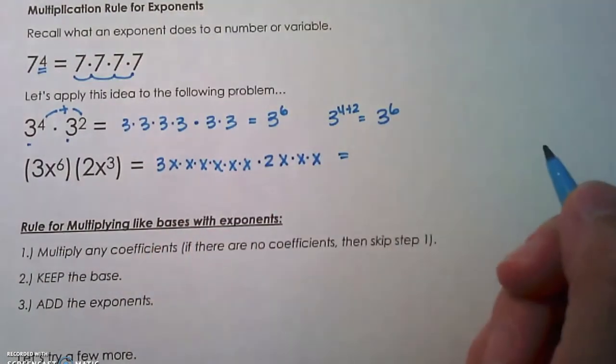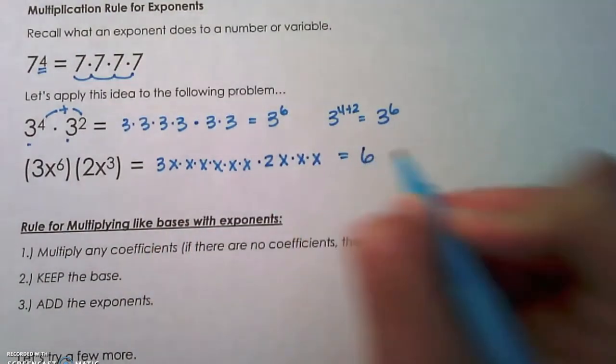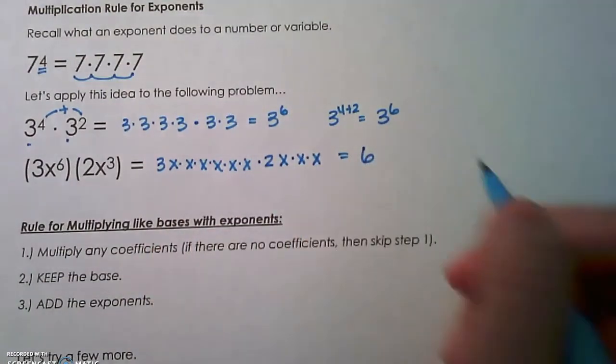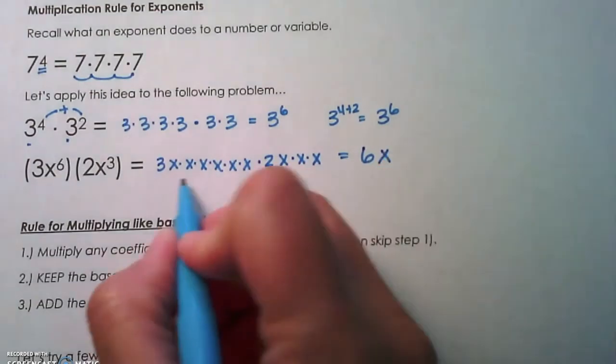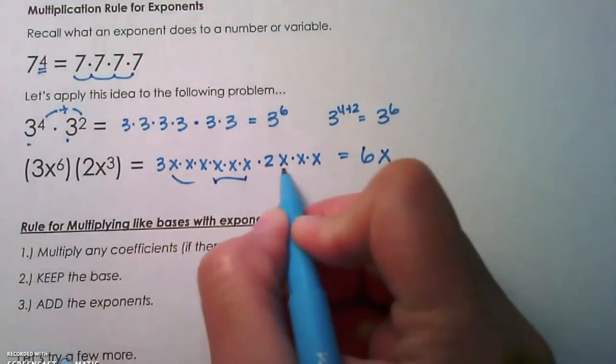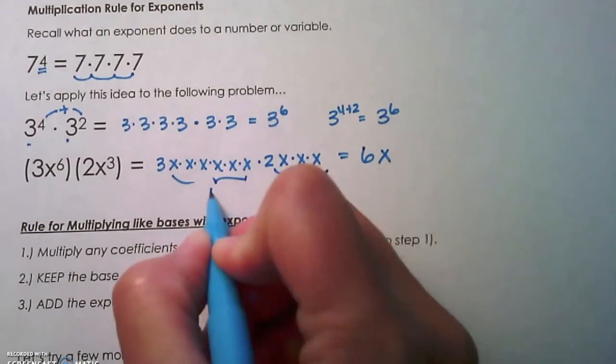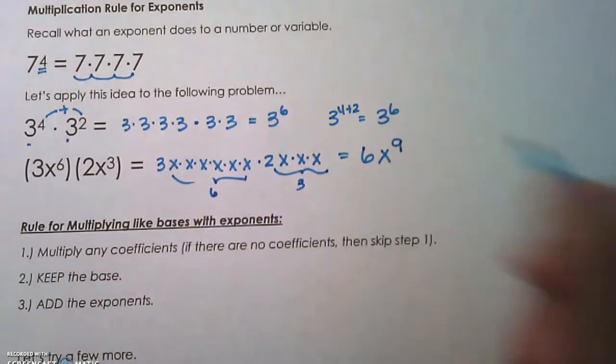The 3 and the 2 are not like bases, so we're just going to multiply those like regular coefficients. And then x, we're going to take the 6x's here plus the 3x's here, and we're going to add those together to get x to the 9th.